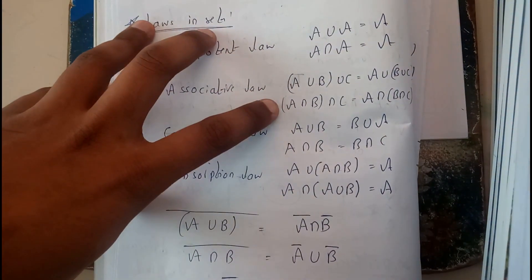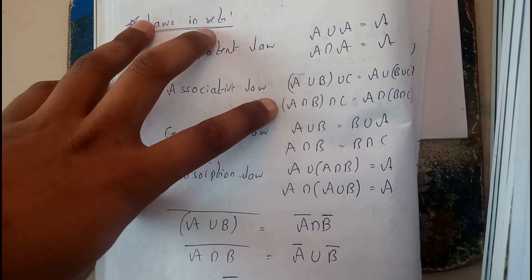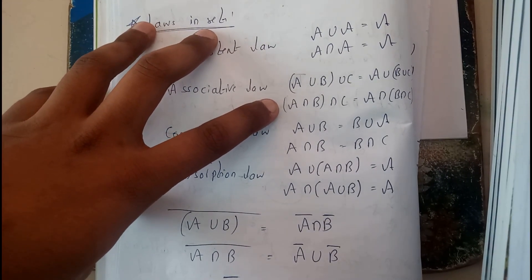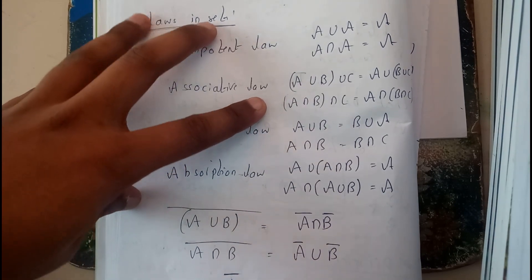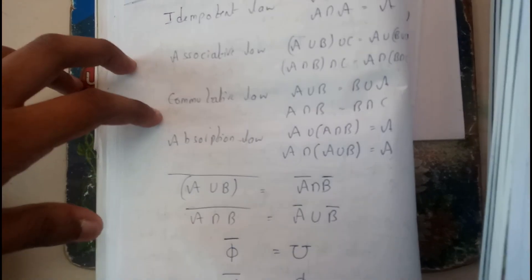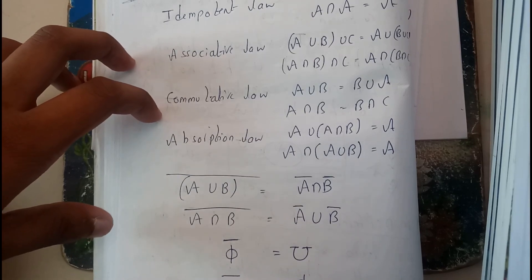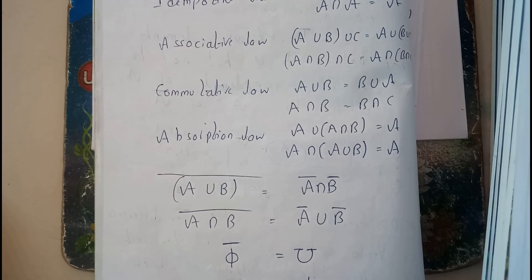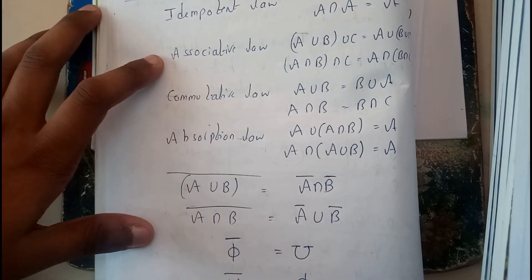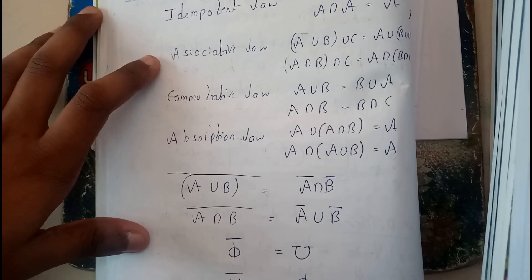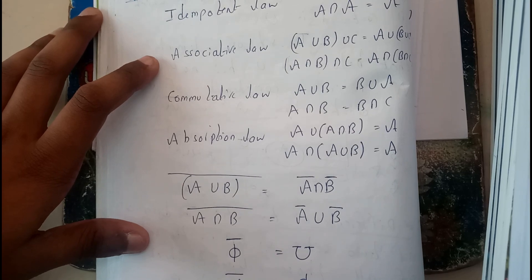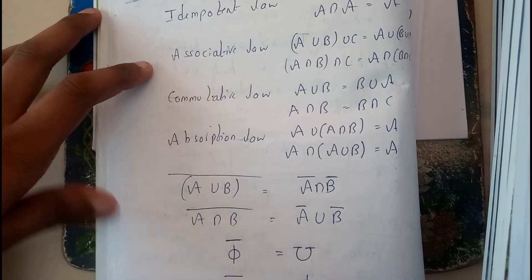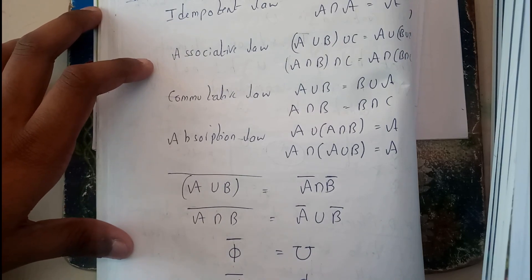union C. It can also be written as A intersection (B intersection C) equals (A intersection B) intersection C. Commutative law: A union B equals B union A, A intersection B equals B intersection A. Absorption law: A union (A intersection B) equals A, and A intersection (A union B) equals A.